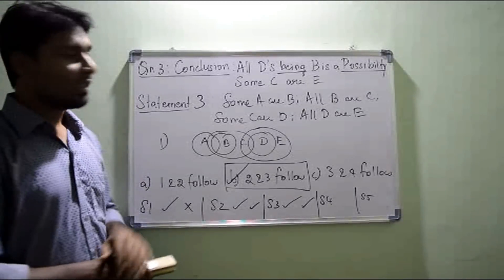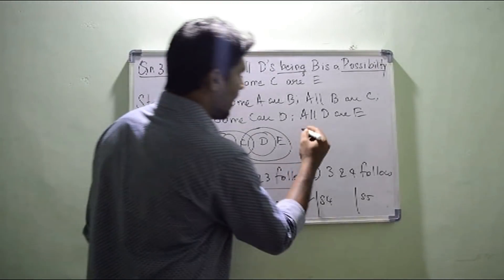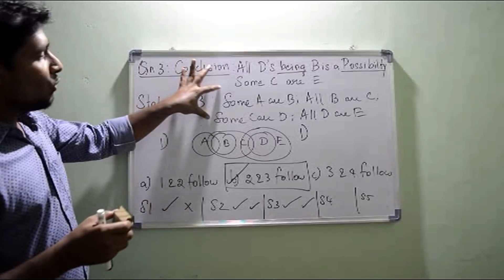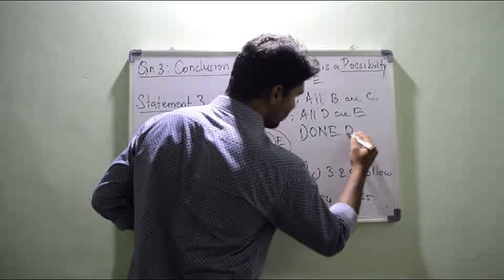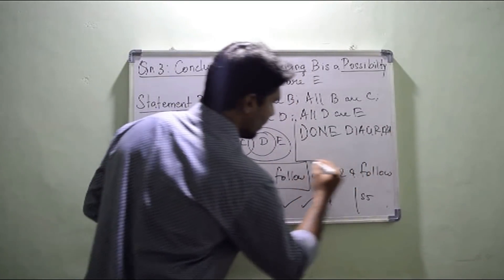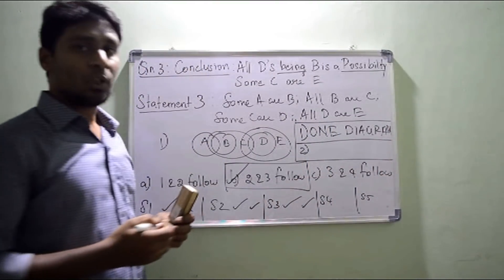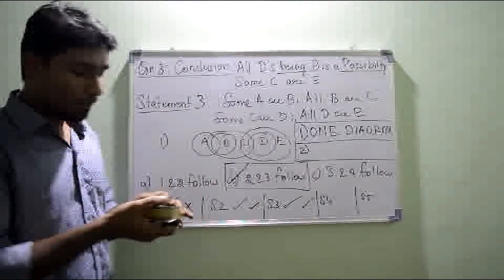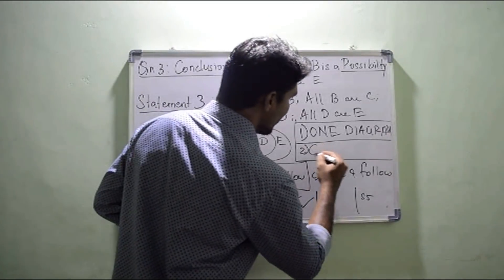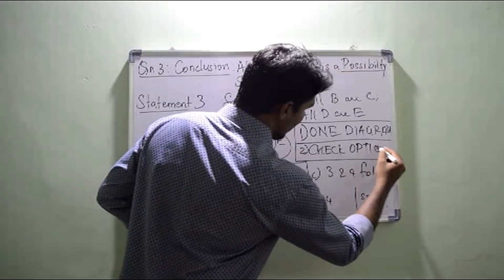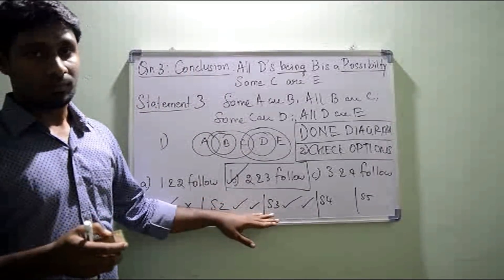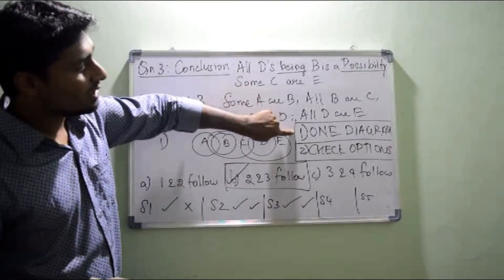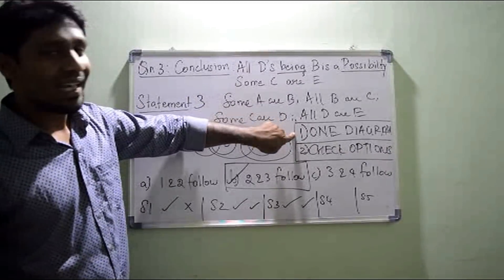This is a very important point. The first highlighted point is: simply draw one diagram — that is mostly enough for reverse syllogism. In reverse syllogism, if you are getting more than two or three statements, simply draw one possible diagram, that is enough. The second important point is: whenever you draw a diagram, always go in reverse order. And the third point is: always simultaneously check with the options as well.